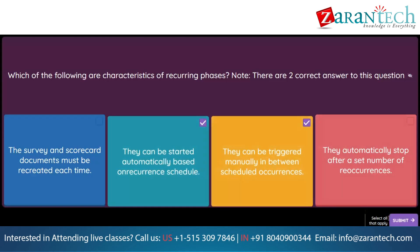Question. You need to use the SM administration area to configure integration between SAP Ariba Supplier Lifecycle and Performance and an external system. Which system group do you require? Option 1: Preferred supplier manager. Option 2: Supplier request manager. Option 3: SM ERP admin. Option 4: SM Ops admin.